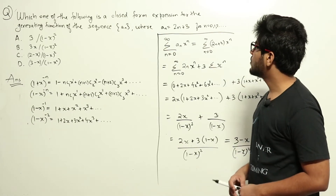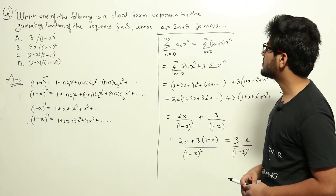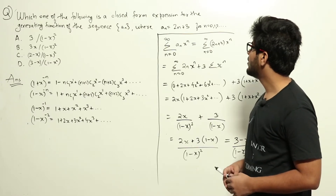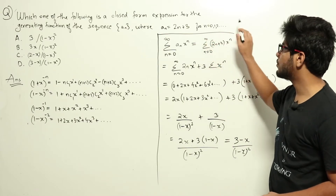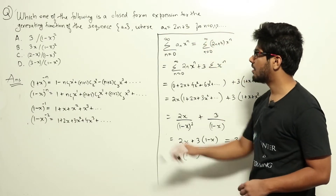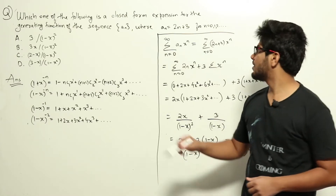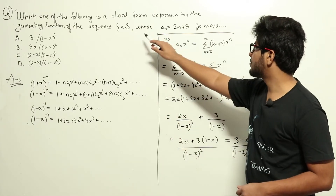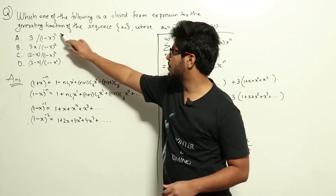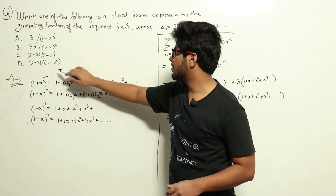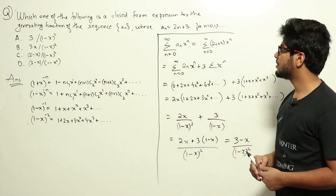Which one of the following is a closed form expression for the generating function of the sequence a_n, where a_n equals 2n plus 3 for all n equal to 0, 1, 2, etc.? We have been given four options for the generating function, and we need to find out the closed form expression — which among these four it is. We'll try to do that.